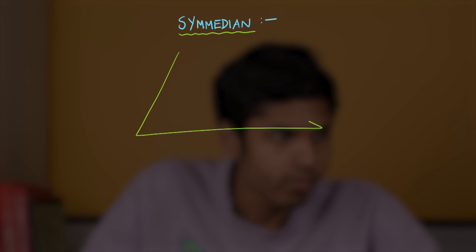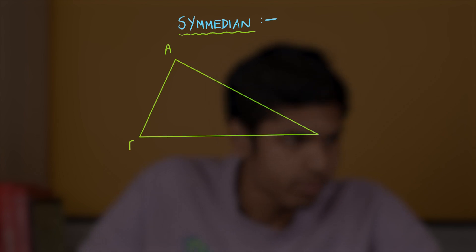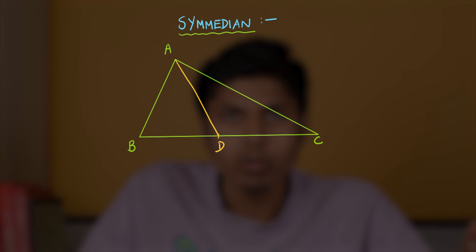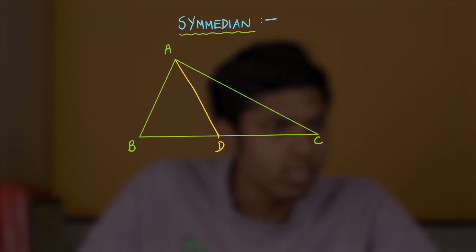Before learning the definition of Dumpty Points, let's understand what is a C-median. We know median is a line from a vertex of the triangle to the midpoint of its opposite side, as shown, where D is the midpoint of BC. This is called as A-median.